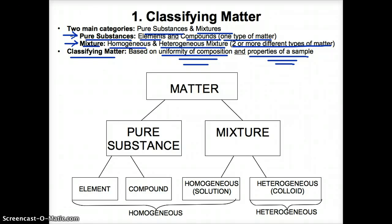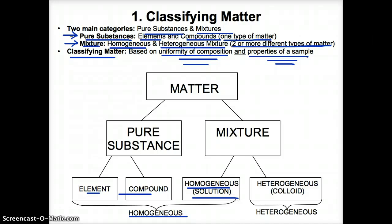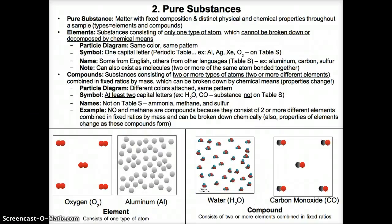Now let's discuss matter quickly. The three types of homogeneous matter are elements, compounds, and homogeneous mixtures, typically called solutions. And the one type of heterogeneous matter is a heterogeneous mixture — sometimes it's called a colloid, but it can also be called a suspension.